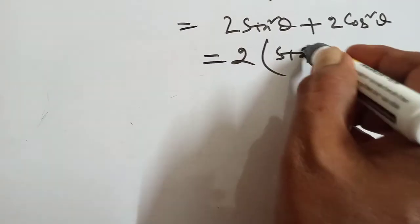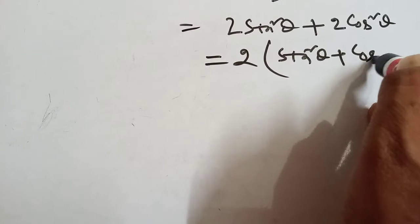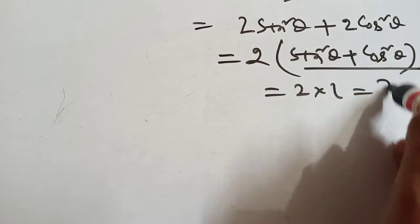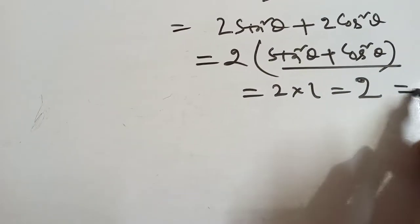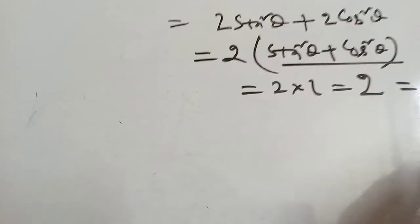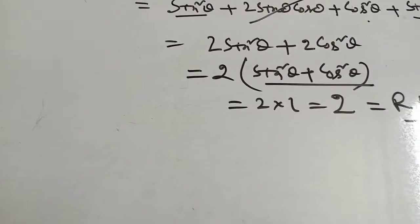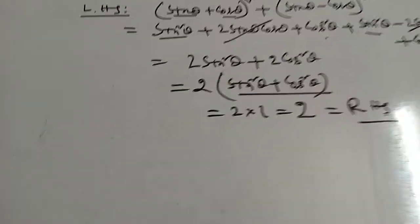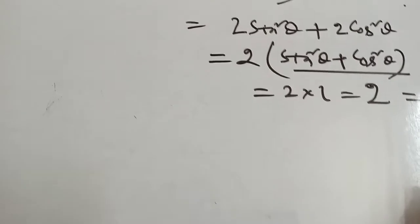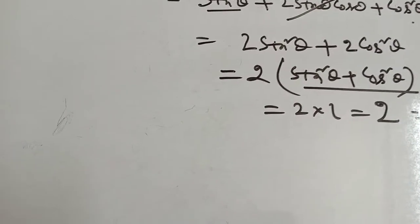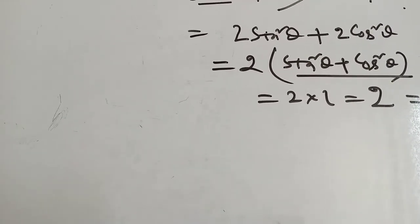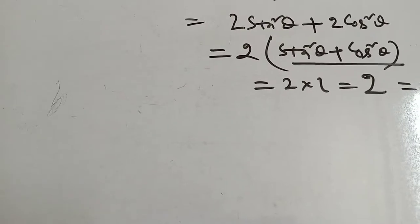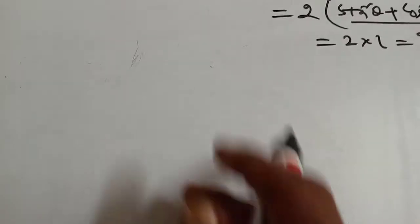Taking sin squared theta plus cos squared theta — this equals 1 — so 2 into 1 equals 2. That is the right hand side. The formulas used: sin squared theta plus cos squared theta equal to 1, a plus b whole square equals a squared plus 2ab plus b squared, and a minus b whole square equals a squared minus 2ab plus b squared.